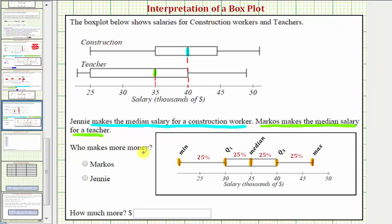So our first question is who makes more money? Well we can see that Jenny makes more money, she makes forty thousand dollars per year. So our answer here is Jenny.